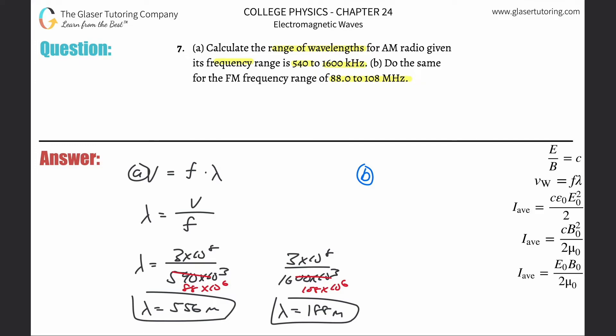This is three times 10 to the eight divided by 88 times 10 to the sixth, so there's about 3.41 meters for the first one.